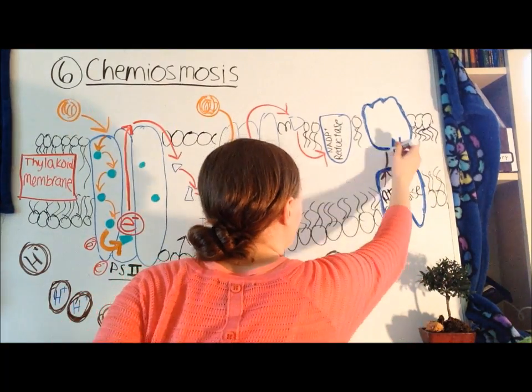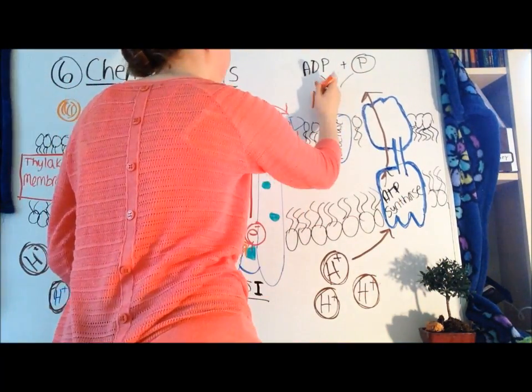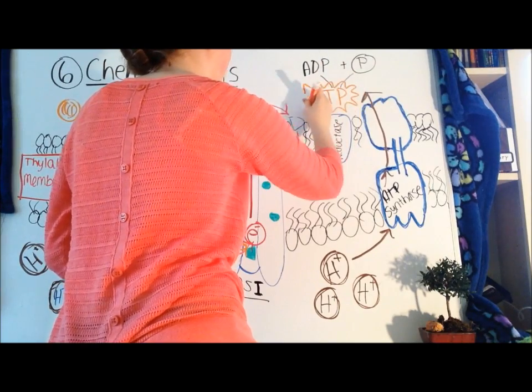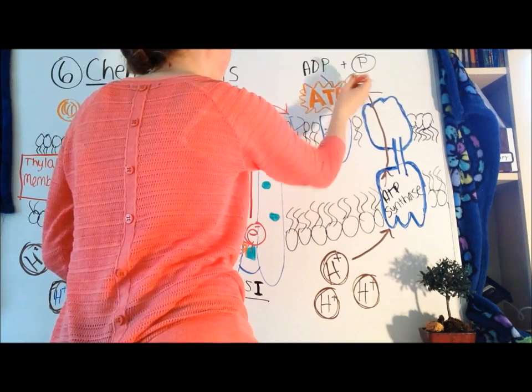As the hydrogen protons pass through, following the gradient from high to low, they spin a part of ATP synthase called the rotor, which binds ADP to a phosphate group, forming ATP, the power-packed chemical energy molecule.